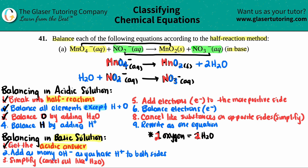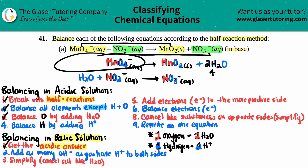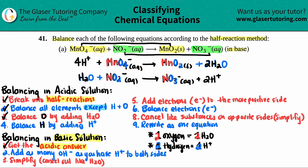Now we have to balance the hydrogen, and we balance hydrogen by adding H⁺. The same rule applies: one hydrogen means one H⁺, two hydrogens means two H⁺. For the top half reaction, I have no hydrogens on the left, but on the right I added them via H2O — two H2Os with two each gives four hydrogens total, so I add four H⁺ to the left. For the bottom, I have two hydrogens from the water on the left and none on the right, so I add two H⁺ to the right.